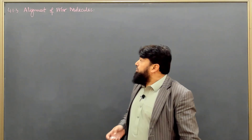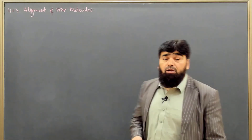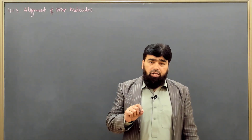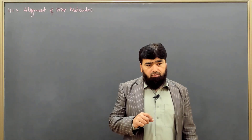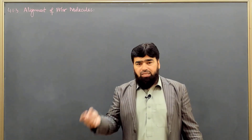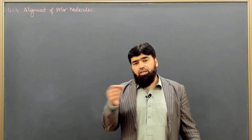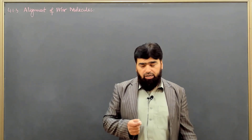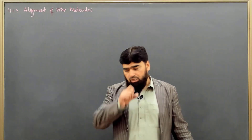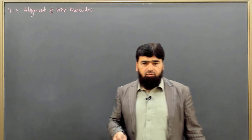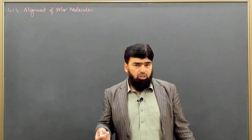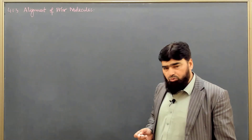In section 4.1.3 we will discuss alignment of polar molecules. First, what is a polar molecule? When we place a neutral atom in an electric field, it does not initially have a dipole moment. But the electric field induces a dipole moment inside that atom — there is a slight dislocation of the positive core in the negative electron cloud. That dipole moment is written as p = q times d, the charge times the displacement.